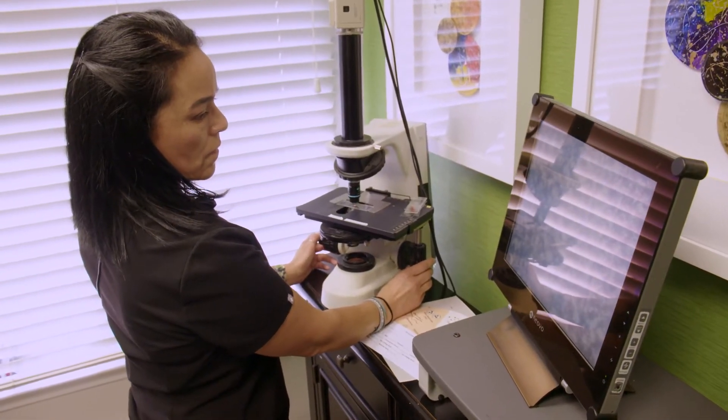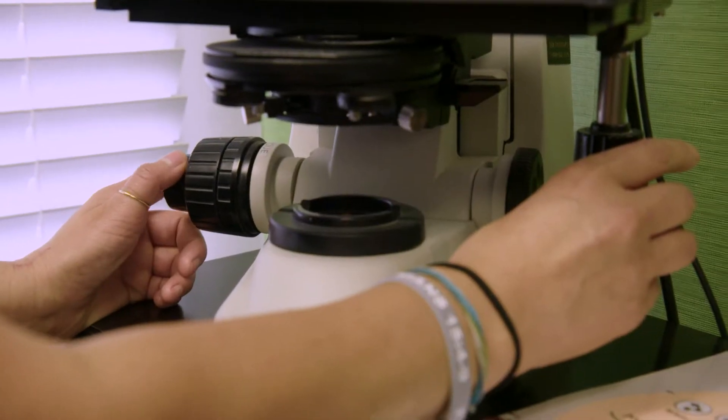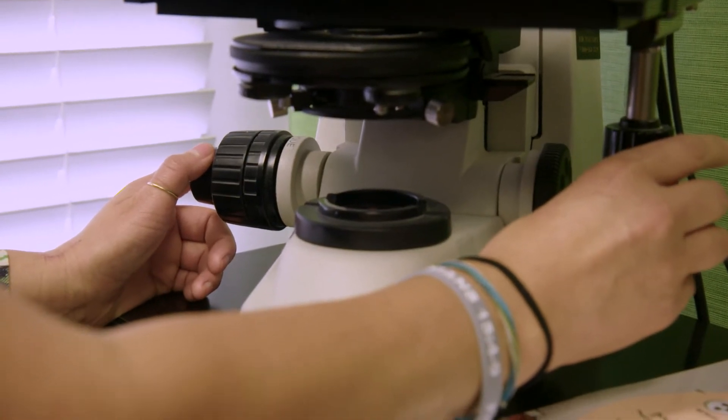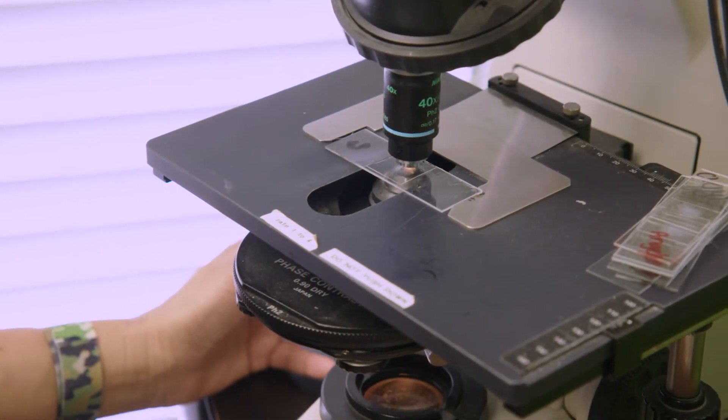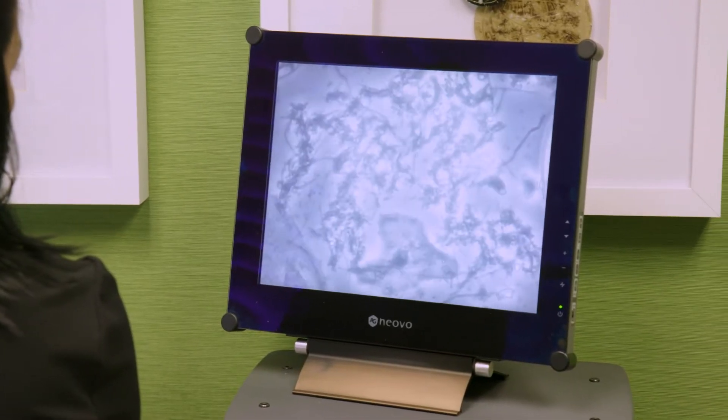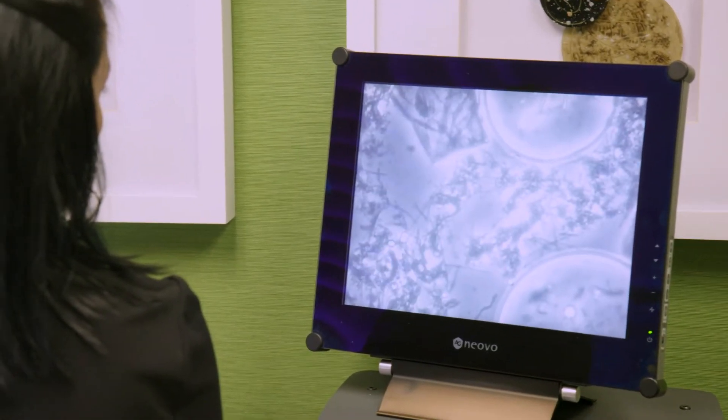Our office is equipped with a state of the art phase contrast microscope that allows us to see on a video screen the type of bacteria in your mouth. By taking a small sample along the gum line and placing it on a slide in the microscope, within a few minutes we can tell if you're infected with high-risk bacteria.